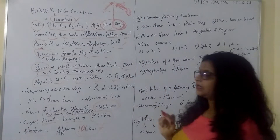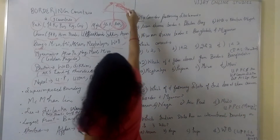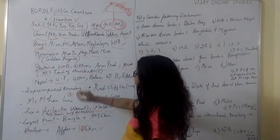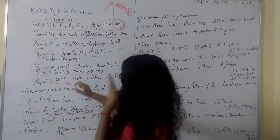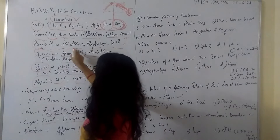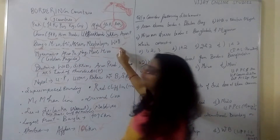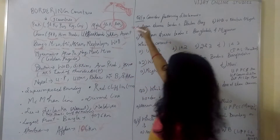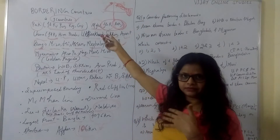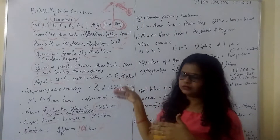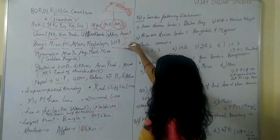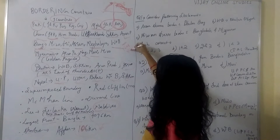Then comes Bangladesh. Bangladesh is mainly in the eastern region of our country. It borders West Bengal, Mizoram, Tripura, Assam, and Meghalaya. Two northeast states which do not share a border with Bangladesh are Nagaland and Manipur.